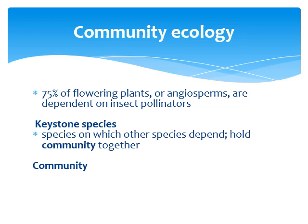That's why we refer to bees as a keystone species. A keystone species is a species on which other species depend. It holds the community together, and if this keystone species were to go away, it would have a really negative and dramatic impact on the community and the ecosystem as a whole.